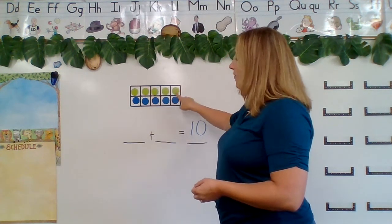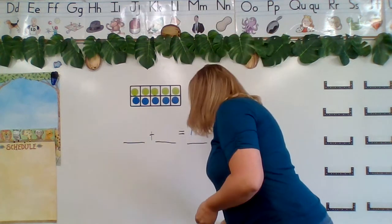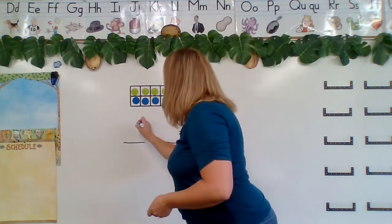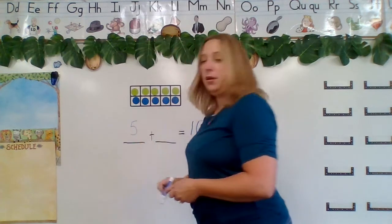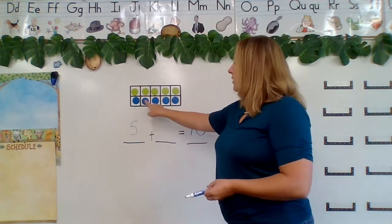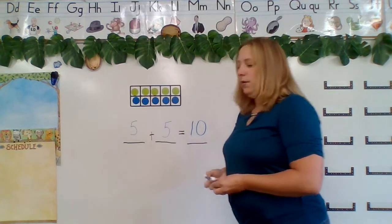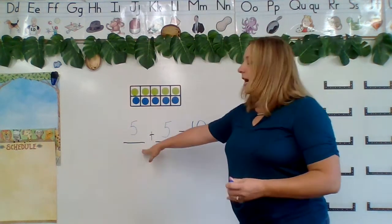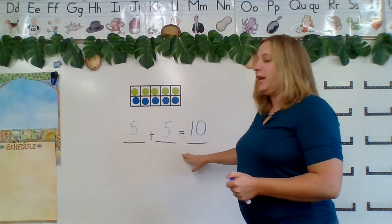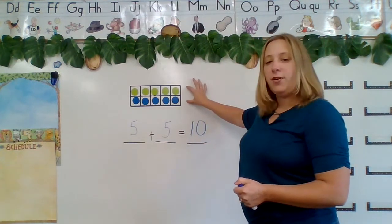1, 2, 3, 4, 5. So I'm going to write 5 plus 1, 2, 3, 4, 5 equals 10. 5 plus 5 equals 10. And that's what our 10 frame shows.